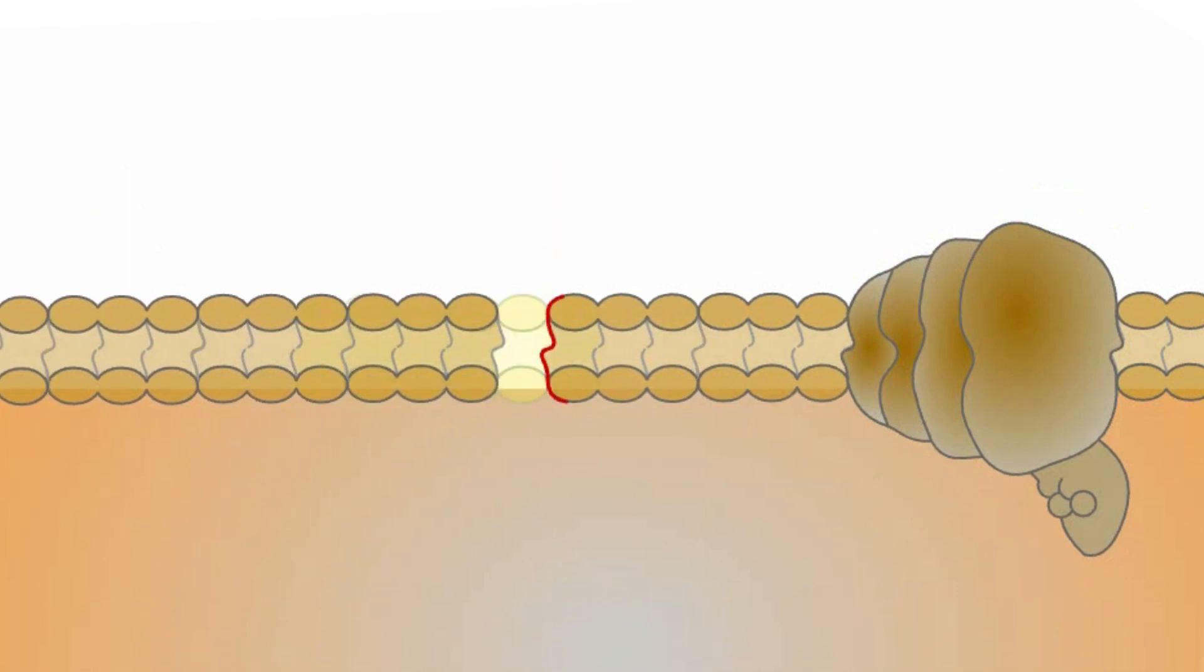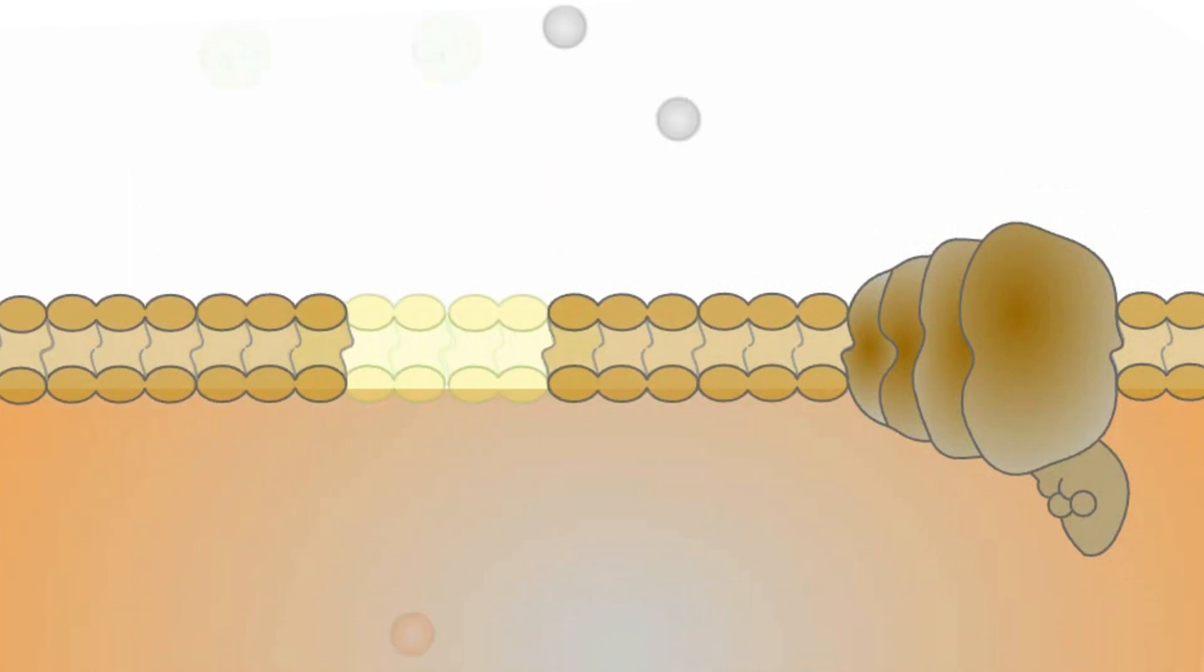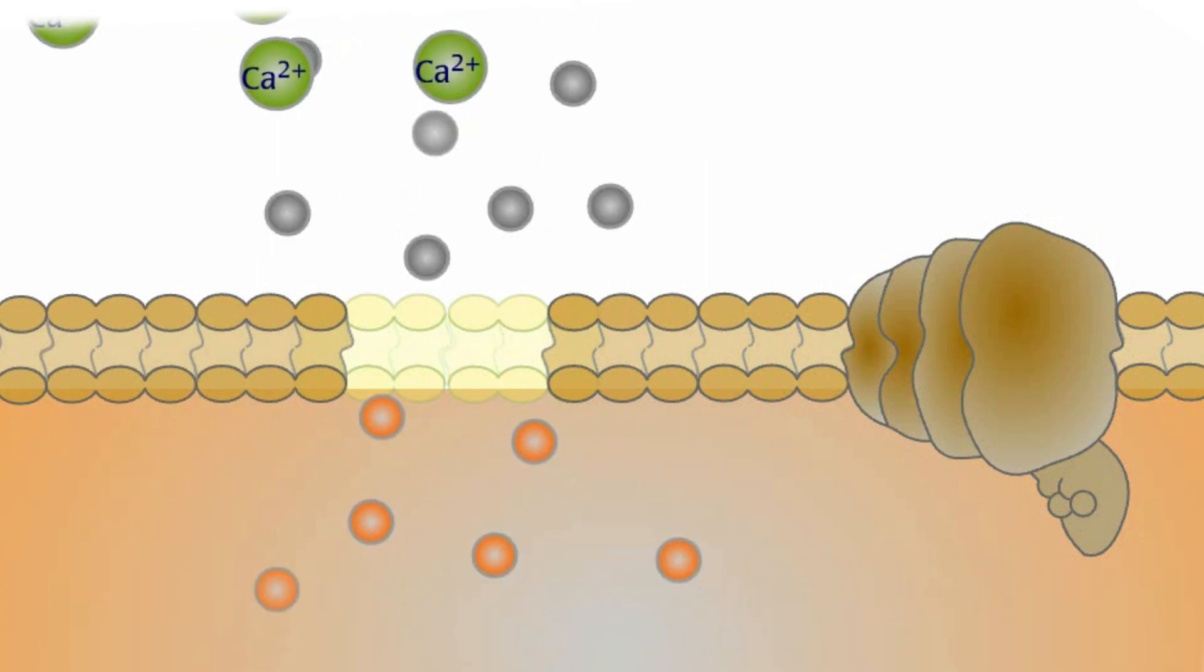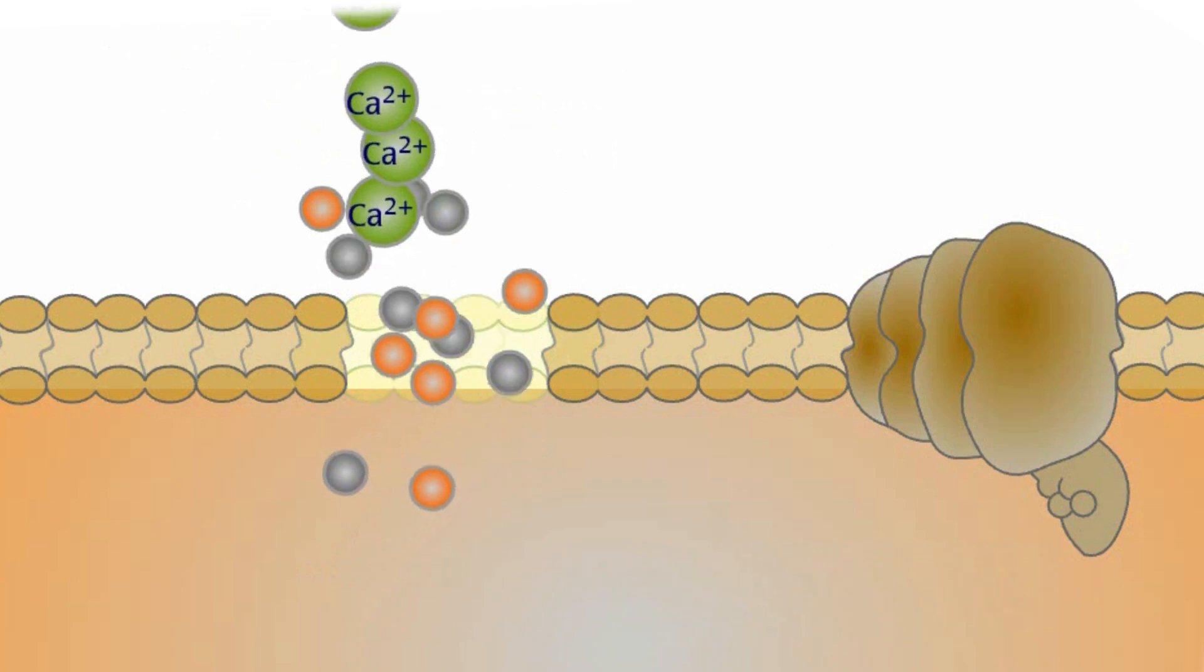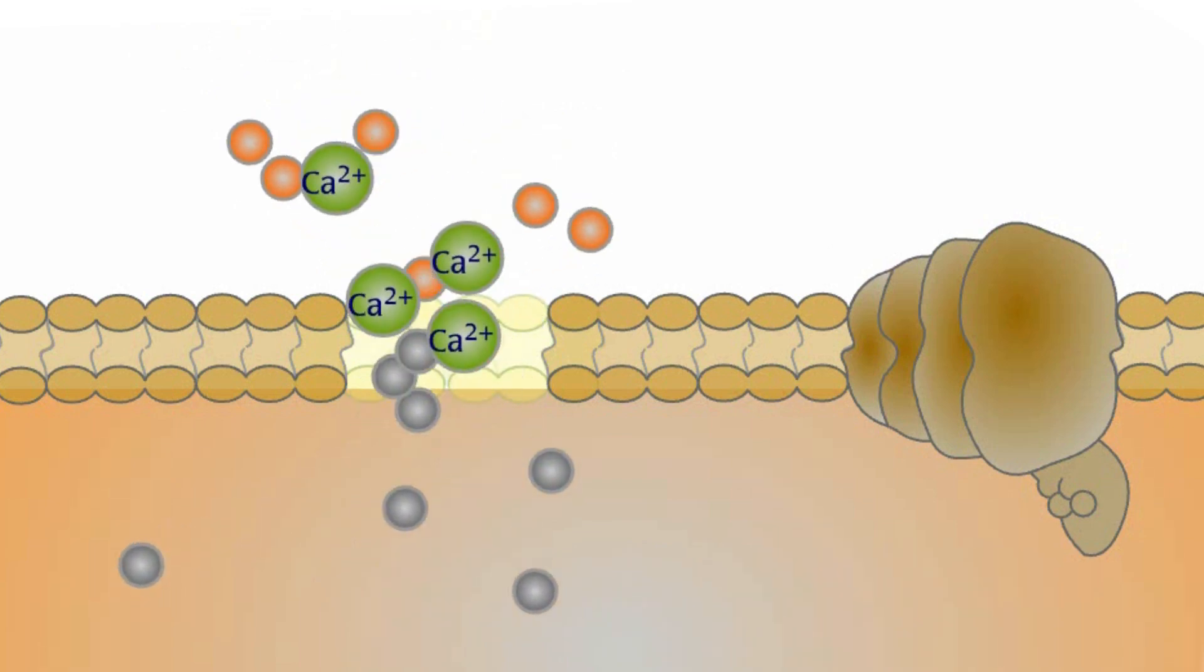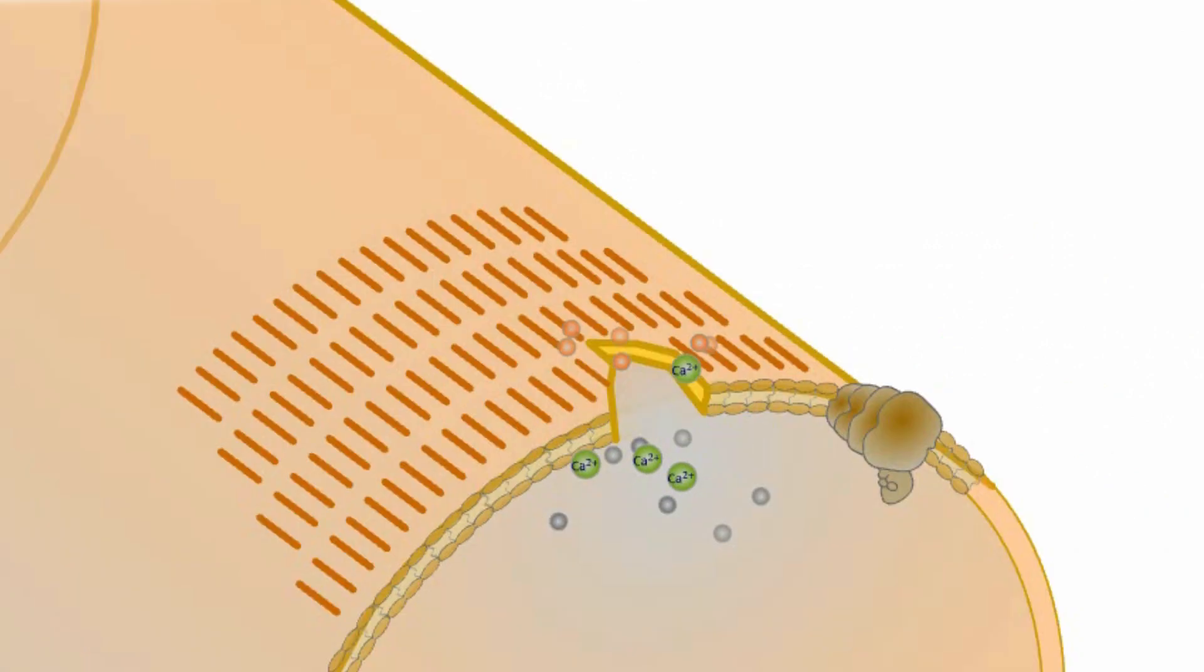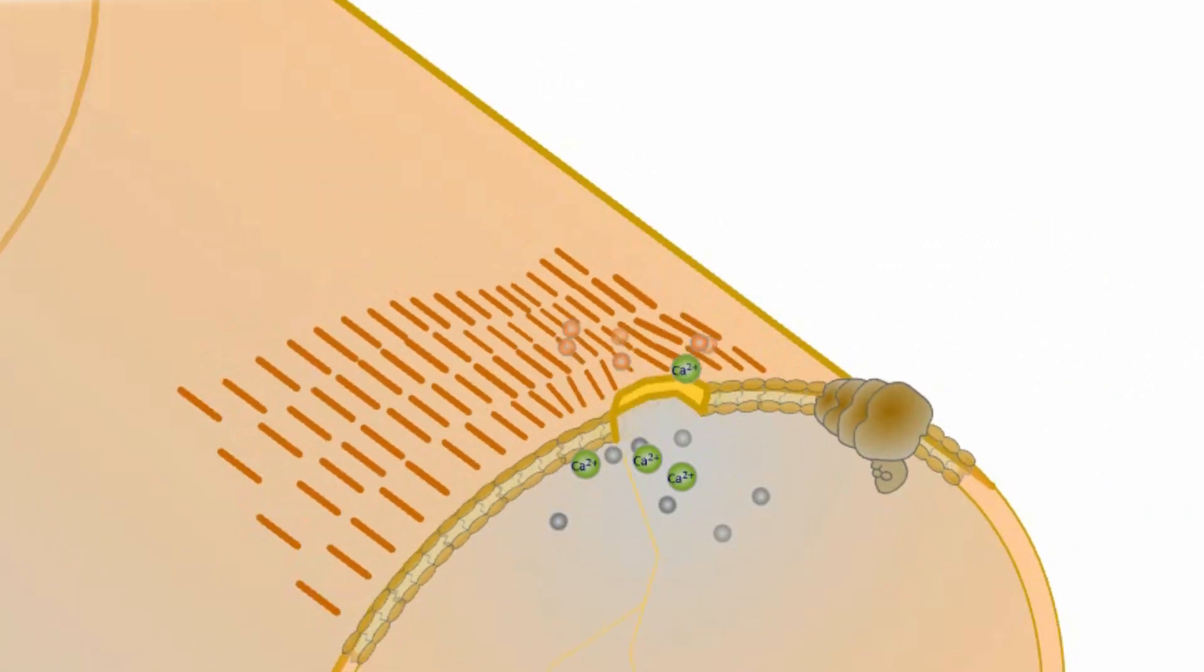When the membrane ruptures, molecules that normally stay inside the cell flow out and molecules that normally stay outside the cell flow in. One of the molecules that flows in, like calcium, causes the muscle cell to contract in the area near the damage.